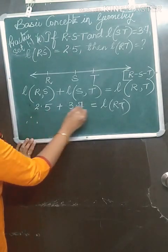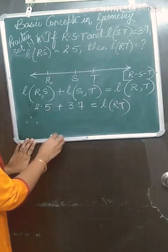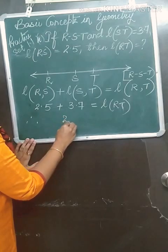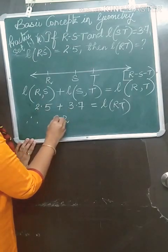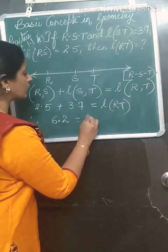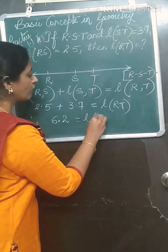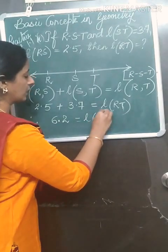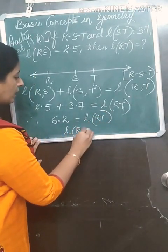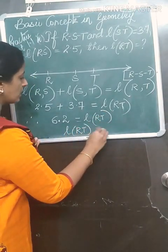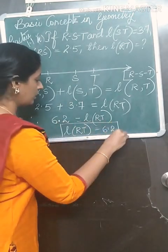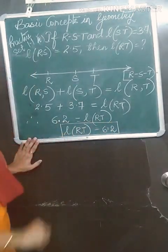Therefore 2.5 plus 3.7 equals 6.2, so length of RT is equal to 6.2.